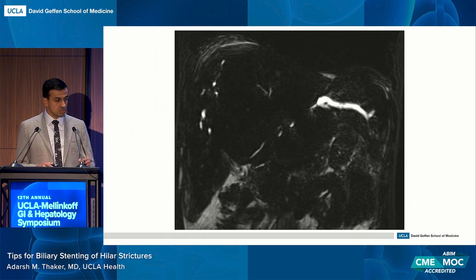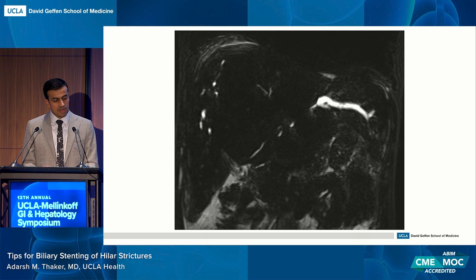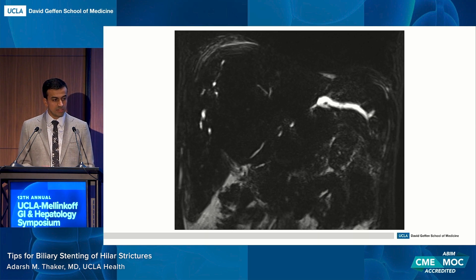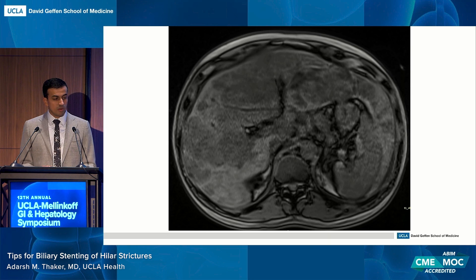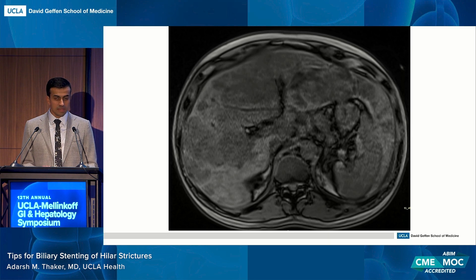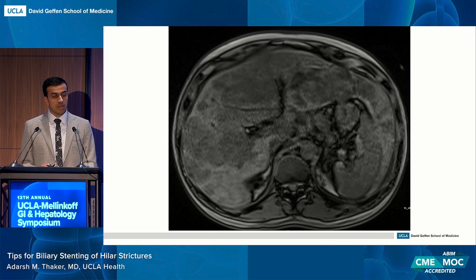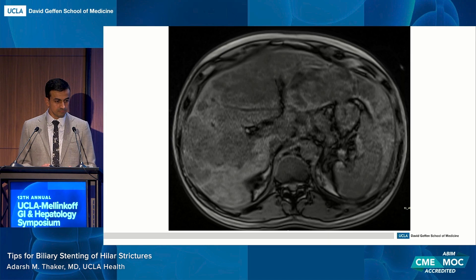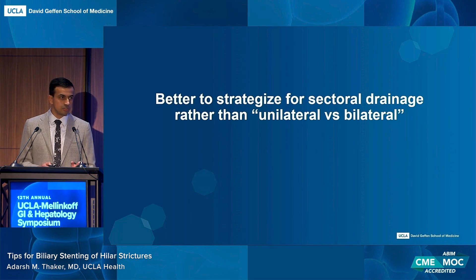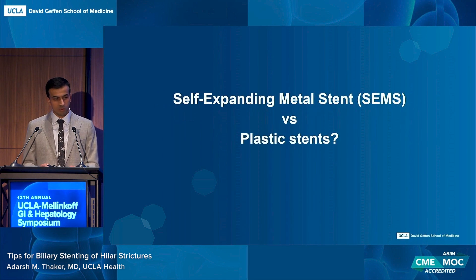A recent case example: a patient's MRCP was read as severe left intrahepatic biliary dilation, suggesting an ERCP might help. But looking at the T1 images on MRI, all of that area showed tumor involvement from HCC. Even though the ducts were dilated, this patient would not be well-served by going after those ducts — it may actually increase complications. We had a conversation with the oncologist about starting a different treatment at that bilirubin level rather than going aggressive with ERCP or IR drainage. Instead of just thinking about bilateral drainage, think about which sector to drain in that liver. Cross-sectional imaging beforehand is quite helpful for that.